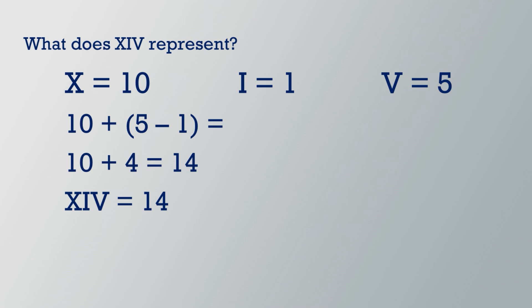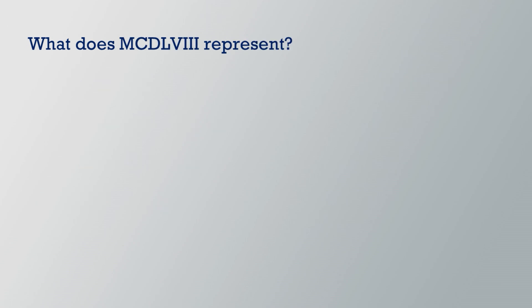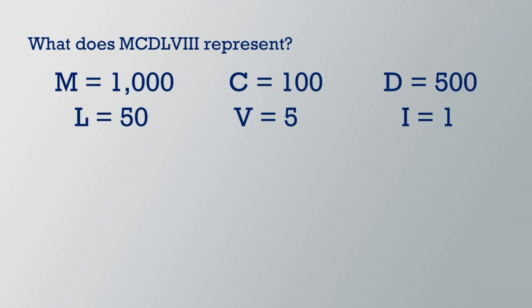Let's try a bigger number. What does MCDLVIII represent? Read the Roman numerals from left to right and look for smaller values to the left of the higher values. Since the numeral C represents 100 and comes before D, which represents 500, we will need to subtract the 100 from the 500. All the other numerals are in order from greatest to least, so we can represent this number with the expression 1,000 plus the difference of 500 minus 100 plus 50 plus 5 plus 1 plus 1 plus 1.